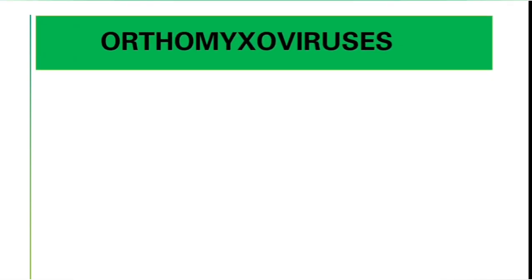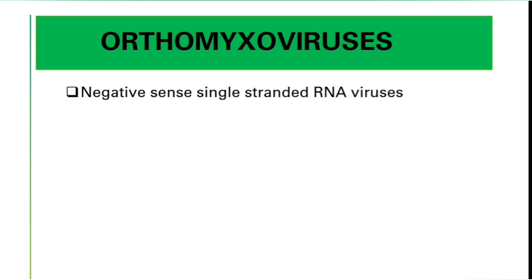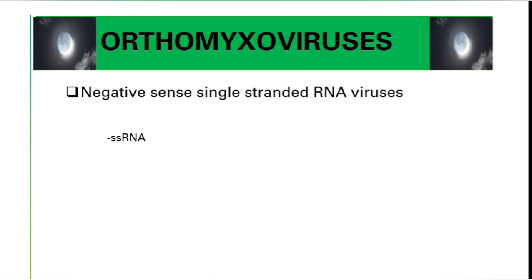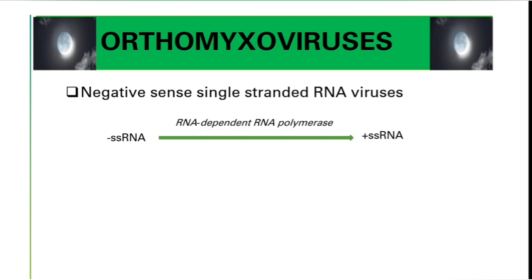Influenza viruses belong to the Orthomyxoviridae family, so they are Orthomyxo viruses. They are negative-sense single-stranded RNA viruses. As covered in the introduction to RNA viruses, negative-sense single-stranded RNA viruses must first be converted to positive-sense RNA in our cells. We don't have the enzyme to do this conversion, so they bring their own enzyme called RNA-dependent RNA polymerase — this is specifically a viral enzyme.